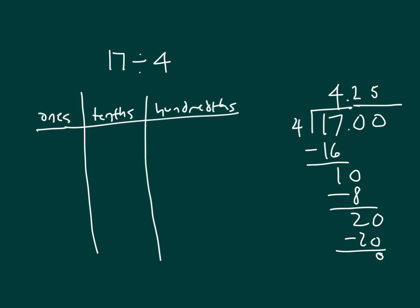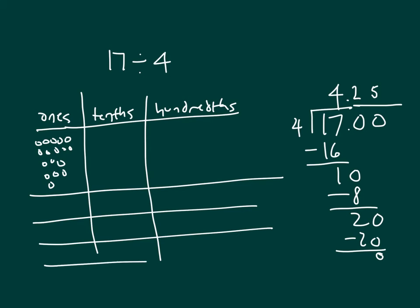Model our number first. 17. Okay. When I take 17 and divide it by 4, there are 4 within each. And then that leaves me with 1. That 1 I can regroup to the tenths place.